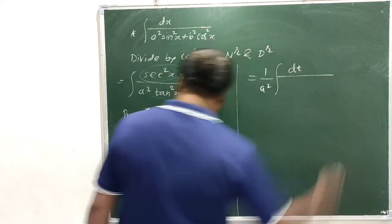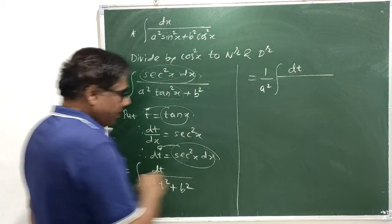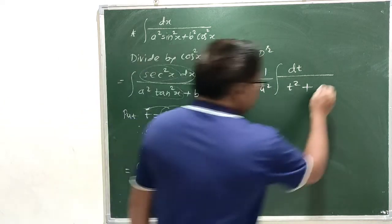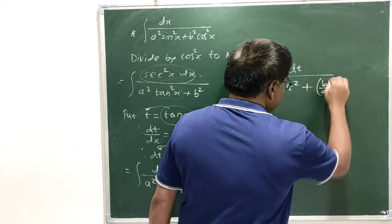In the numerator, we get just dt upon t square plus b square by a square. We can write b by a whole square.